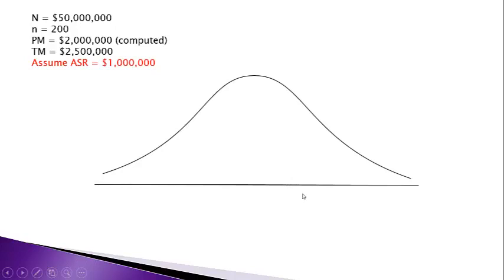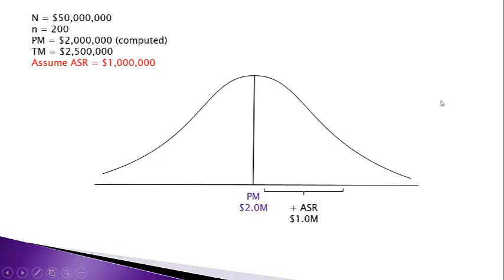We have a bell curve to illustrate our population distribution. Most account balances do not follow a bell curve — they're highly skewed — but we'll keep this example simple. Starting with the projected misstatement of $2 million, extrapolated from the sample results, we give ourselves a cushion of $1 million plus or minus using the allowance for sampling risk. Taking the projected misstatement of $2 million plus the $1 million allowance gives us the UML — the upper misstatement limit — of $3 million.